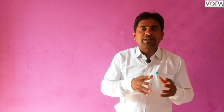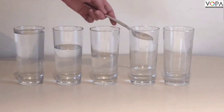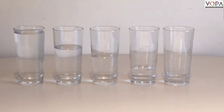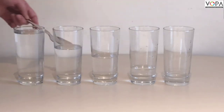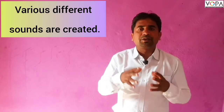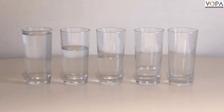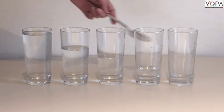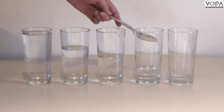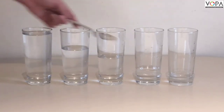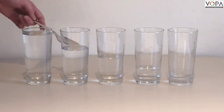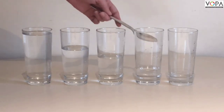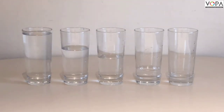Now we discuss frequencies using an experiment. Take six or seven glasses in a row and fill them with increasing levels of water. Strike each glass with a pencil and different sounds will be heard. Each glass has a different air column, and due to the different heights of air columns, different frequencies of sound waves are produced, giving a different sound from each glass at a specific frequency.